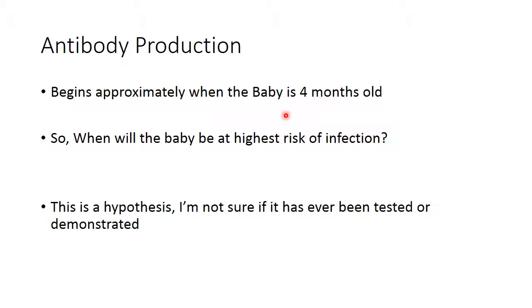What does this mean about the baby's risk for infection? I'm hypothesizing. This is a hypothesis. I'm not sure if it's ever been tested or demonstrated. But I'm hypothesizing that just prior to four months and probably up to about four months and two weeks, the baby is at the highest risk of infection. I'm saying that because it usually takes about a week to a week and a half after an antigen is presented before the body ramps up its production and starts fighting that infection full force using the lymphocytes. The innate immune system, meaning the neutrophils, the mast cells, everything else, will be working just fine. However, the adaptive immune system takes about a week to a week and a half, sometimes up to two weeks, to really kick in high gear.